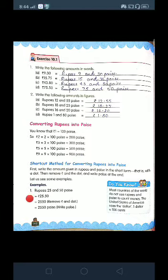At this example, here you have to convert rupees 25 and 50 paise into paise. Since one rupee is equal to 100 paise, first rupees 25 into paise will be equal to 25 into 100, that is 2500 paise.